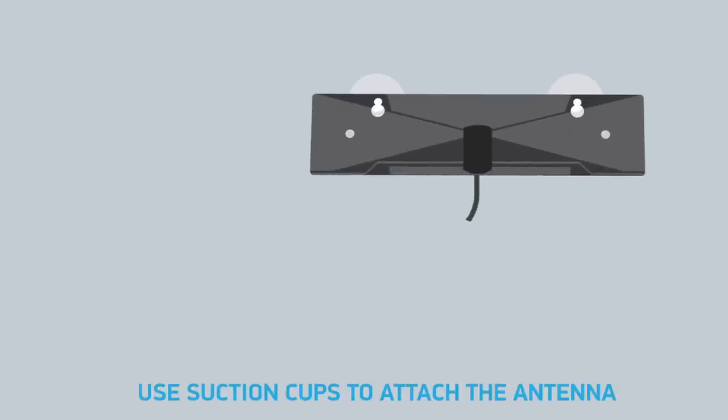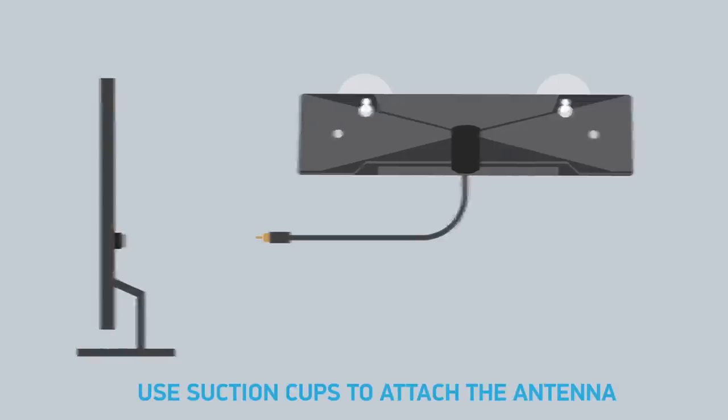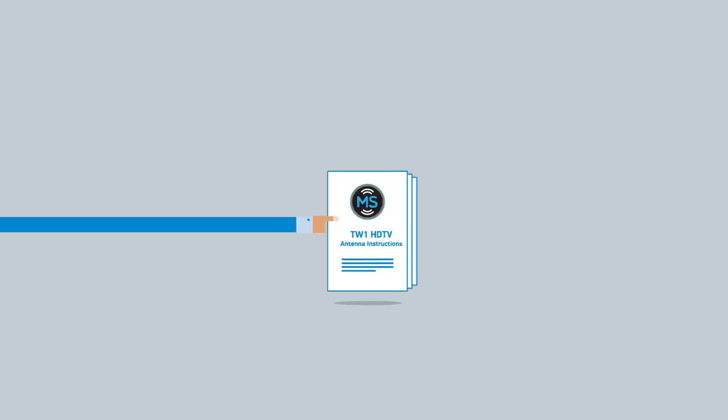You can use the enclosed suction cups in case you wish to attach the antenna on a window or flat surface. You can set up your antenna using the included Quick Start Guide, or stay tuned to this video, which illustrates the simple installation process.